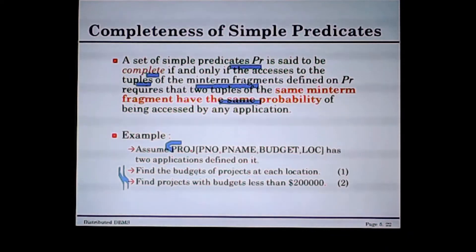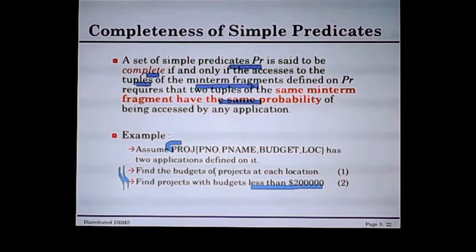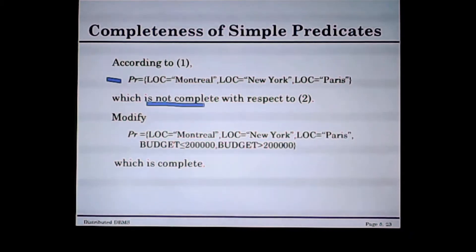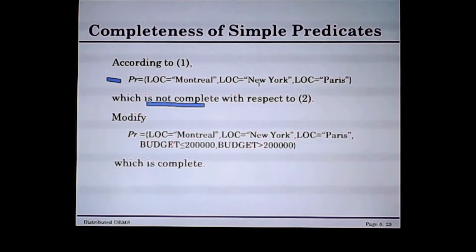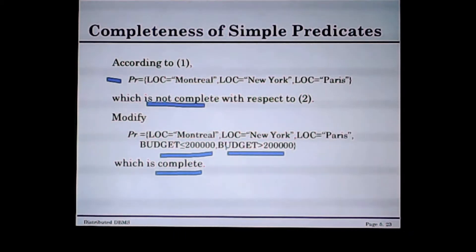The first application finds the budget of a project at its location, and the second application finds projects with budget less than $200,000. The current set of simple predicates is not complete because, in location New York, there are two tuples that differ. When you add a predicate — for example, budget less than, and budget greater than or equal to some value — it will be complete. It is easy to recognize whether a set of predicates is complete or not.